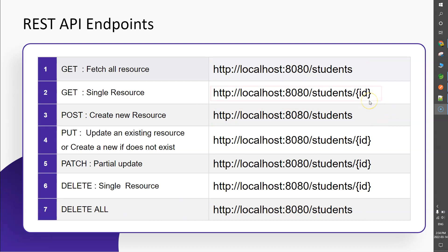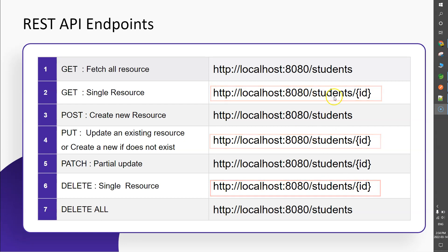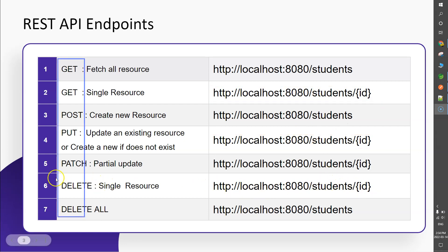If you need to deal with a specific resource, you have to pass the ID. For example, to fetch a single resource, update a specific resource, or delete a specific resource, you pass the ID in the endpoint. So the endpoints look exactly similar, but the difference lies in the function used with that particular endpoint.